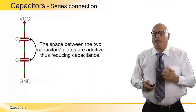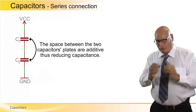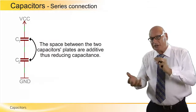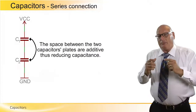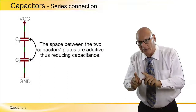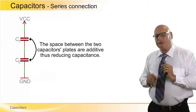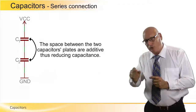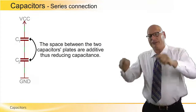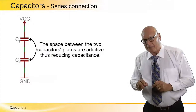Let's discuss the content of the capacitor so we can understand. Basically, we can compare capacitors to resistors — they are the opposite of resistors. Two capacitors in series behave and operate just like two resistors in parallel. The space between the two capacitor plates are additive, therefore reducing the capacitance. It's equivalent to two resistors in parallel. Remember, when we have two resistors in parallel, their equivalent resistance will be lower than the lower one between the two.